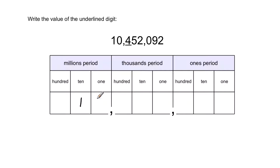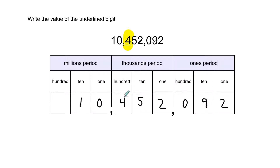Looking at our number, there's a ones period, a thousands period, and only part of the millions period — there are only two digits there, not three. We put this number starting with the millions period on the place value chart, then 452 goes in the thousands period, and then 920 goes in the ones period. Now our number is successfully on the place value chart. To know the name of this digit, we use the digit — it's four.